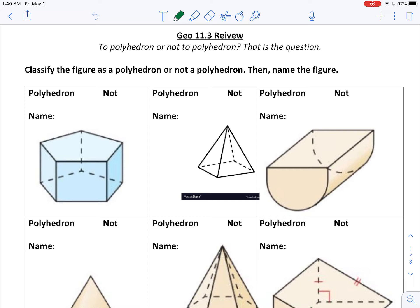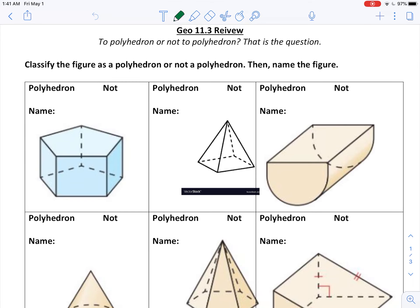Today we are going to review 11.3, sort of identifying our 3D shapes, our polyhedron, our polyhedra. We will have a quiz when we come back next week over this and then we will start surface area and volume of these polyhedra.